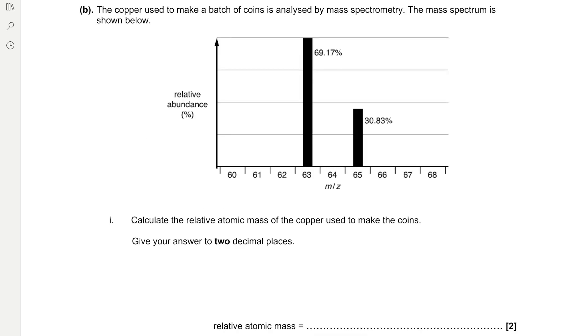The copper used to make a batch of coins is analyzed by mass spectrometry. The mass spectrum is shown below. So we have two isotopes of copper present in our coins. We've got one with an m/z of 63 and that has an abundance of 69.17%. And then the other isotope has an m/z value of 65 and its abundance is 30.83%. They're asking us to calculate the relative atomic mass of the copper used to make the coins and we need to give it to two decimal places.